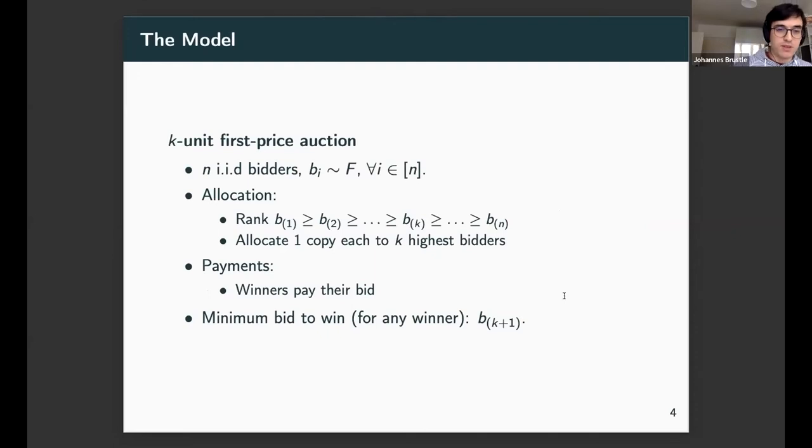Let me introduce the model. It's a very simple K-unit first-price auction where you have n bidders being sold K copies of a single item. It's important to note I'm taking bi, the bids, IID from some fixed distribution. The allocation is simple: we rank the bids in decreasing order, and each of the K-highest bidders receives one copy of the item. Since it's a first-price auction, the winner just pays their bid. The quantity we're interested in is the minimum bid to win, meaning all other bids are fixed ex-post. What could one winning bidder have bid and still received an item? Obviously, the smallest bid they could have made is b_{K+1}.